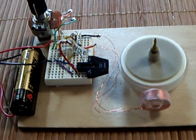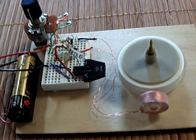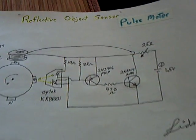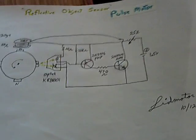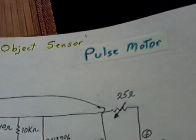And that's only drawn about 11 or 12 milliamps on the AA battery. And this is the circuit diagram that I came up with. And I'm calling this the reflective object sensor pulse motor.